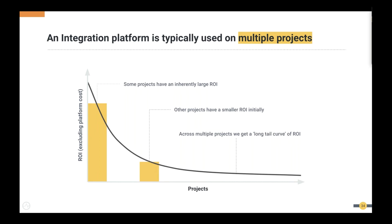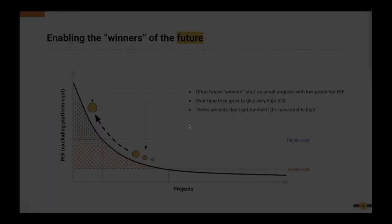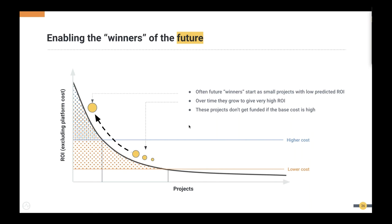There's an interesting graph showing that certain projects have inherently large ROI — you spend a lot and get a lot — while others have smaller ROI initially but can grow into larger ROI projects. If you select a platform with a higher starting cost, you'll be able to start fewer projects. But if you start with a platform with a lower initial cost, you can initiate more projects, and some of those smaller projects may become high-ROI projects in the future. This also gives you the luxury to innovate within the organization without spending a fortune on a single high-risk, high-ROI project.